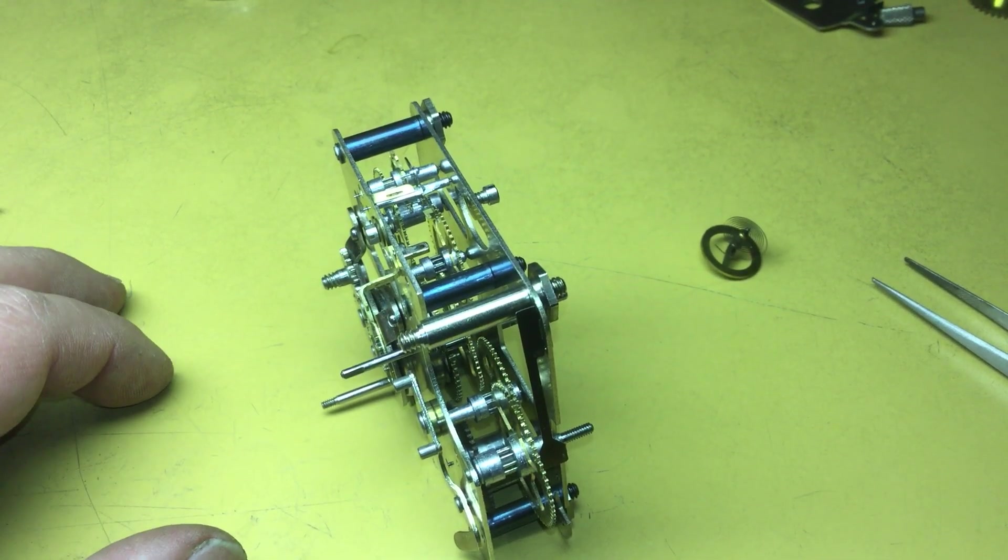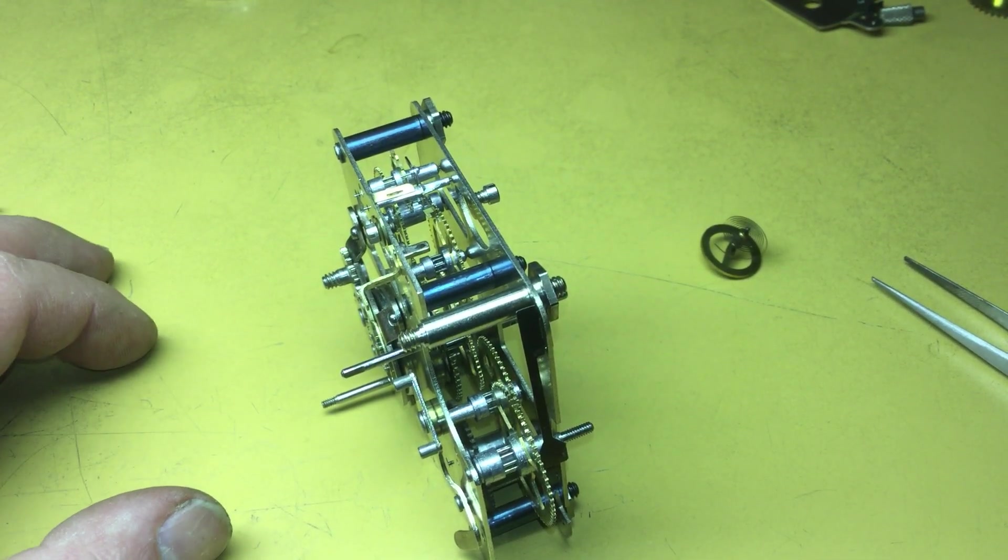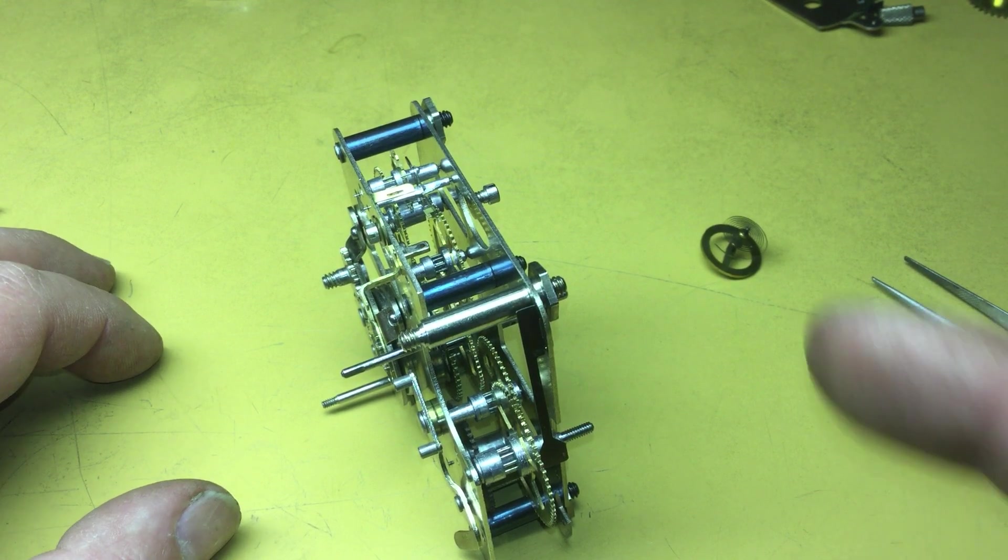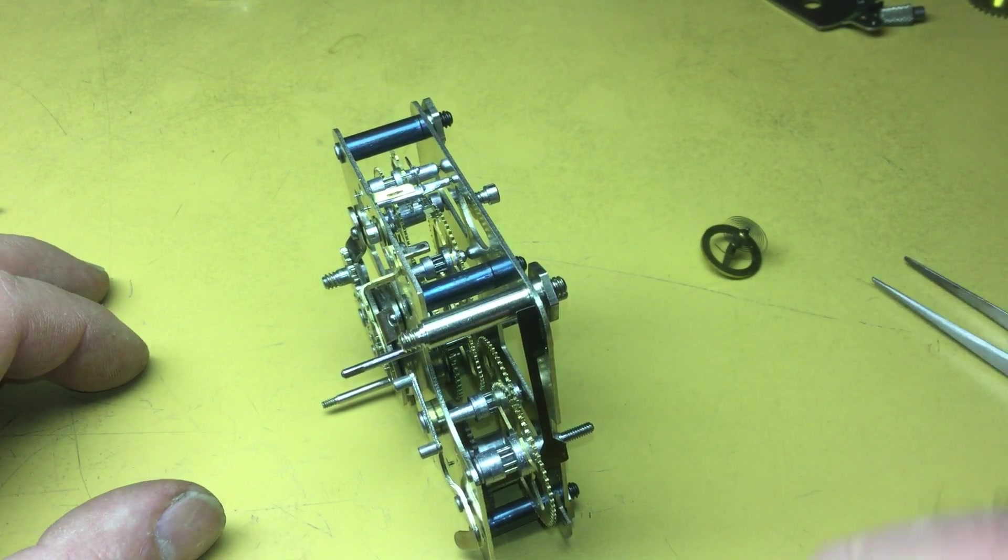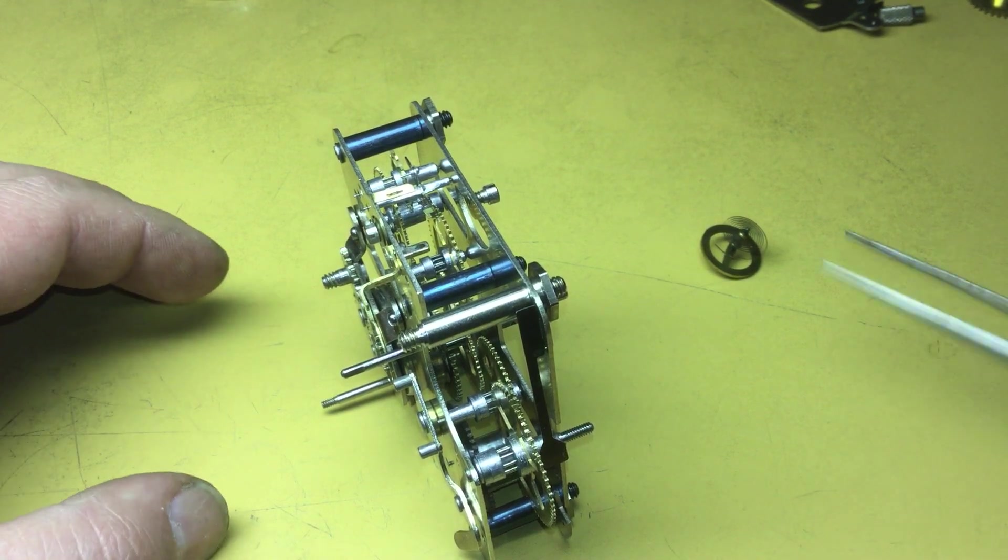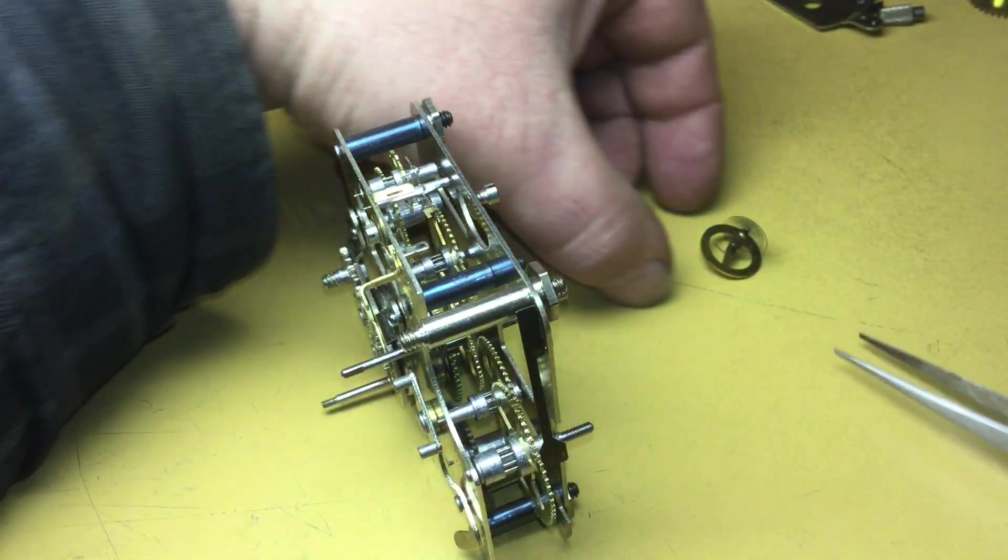Welcome back viewers to the continuation of the Big Ben Chime Alarm Style 4 rebuild. I'm going to put the balance wheel back in the movement and see about setting the beat and making it ready to run.